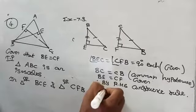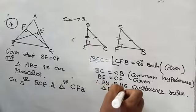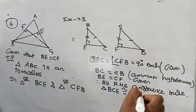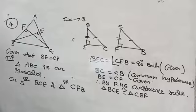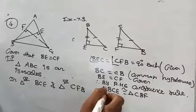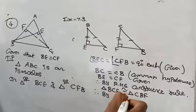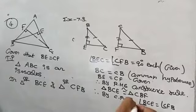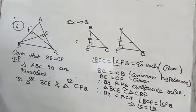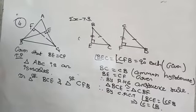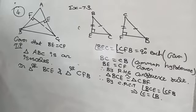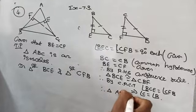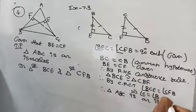By RHS congruence rule, triangle BCE is congruent to triangle CBF. Therefore, by CPCT, angle BCE equal to angle CBF. By CPCT, angle C equal to angle B. This implies that since any two angles are equal, triangle ABC is an isosceles triangle.